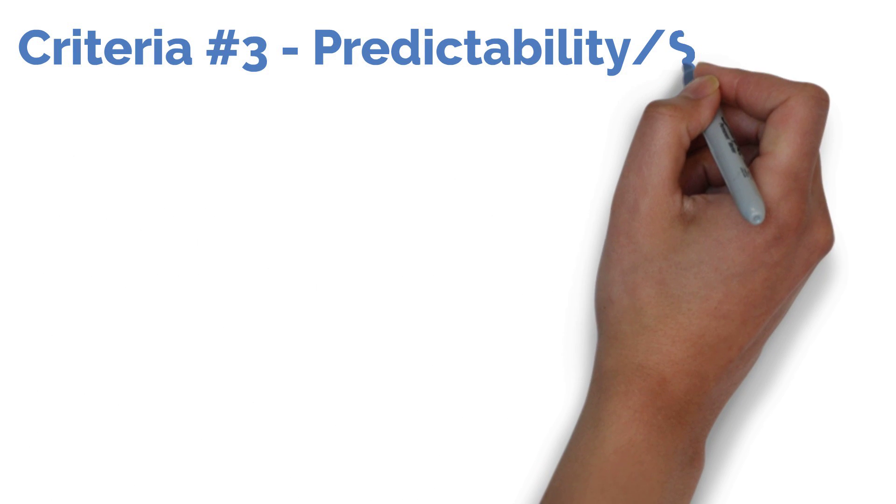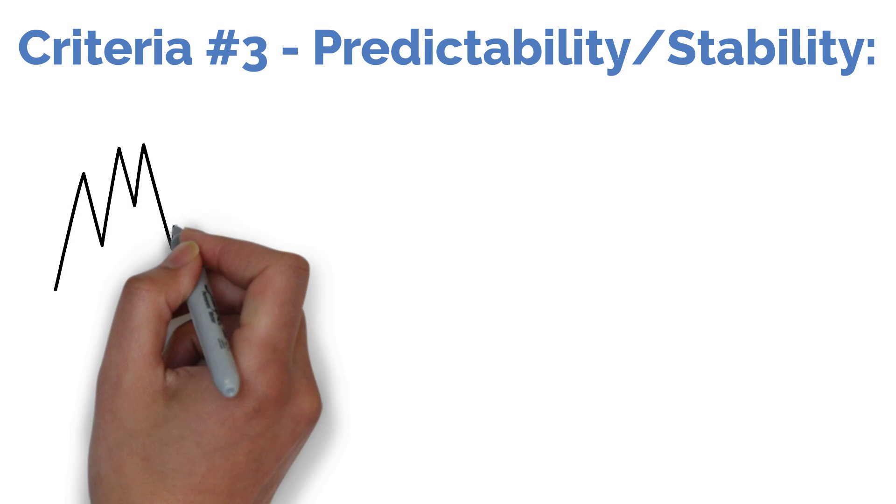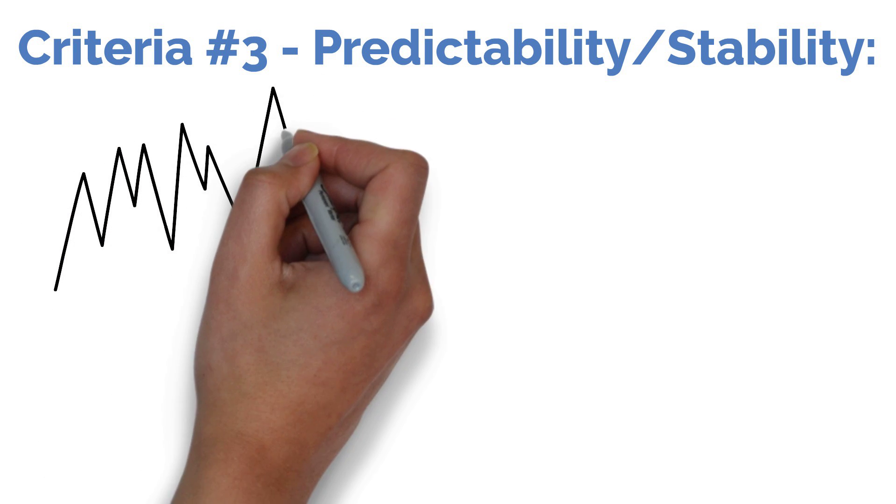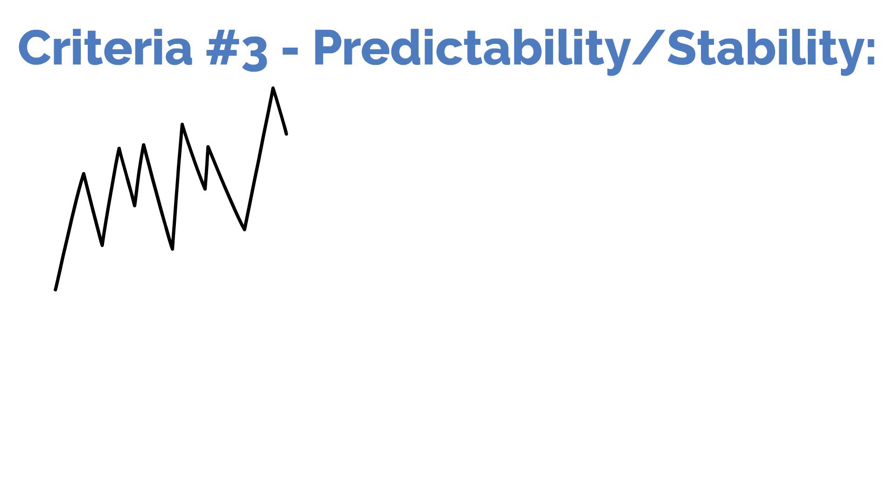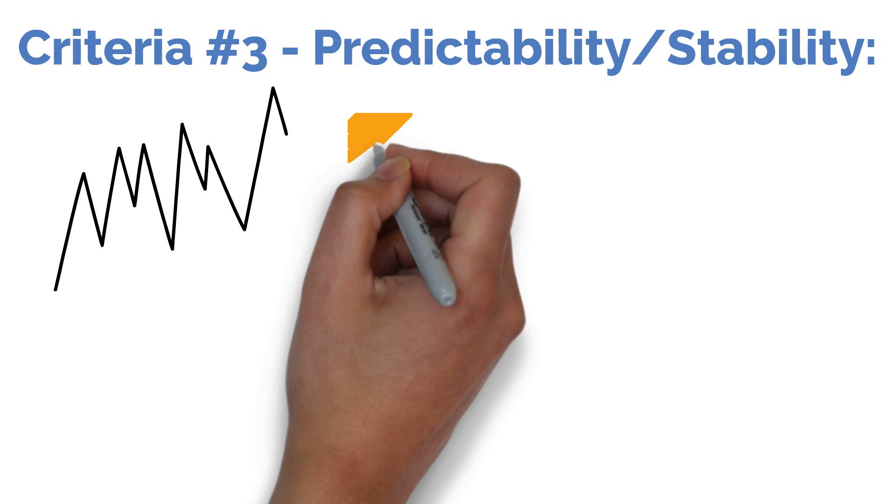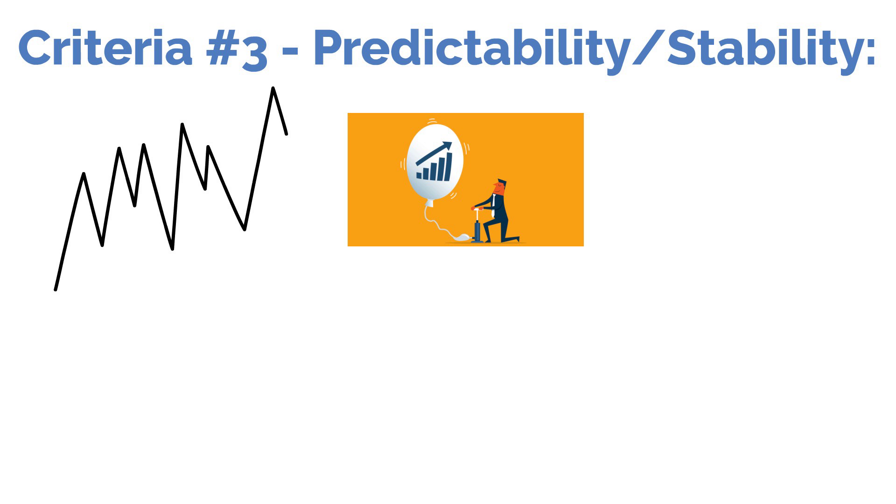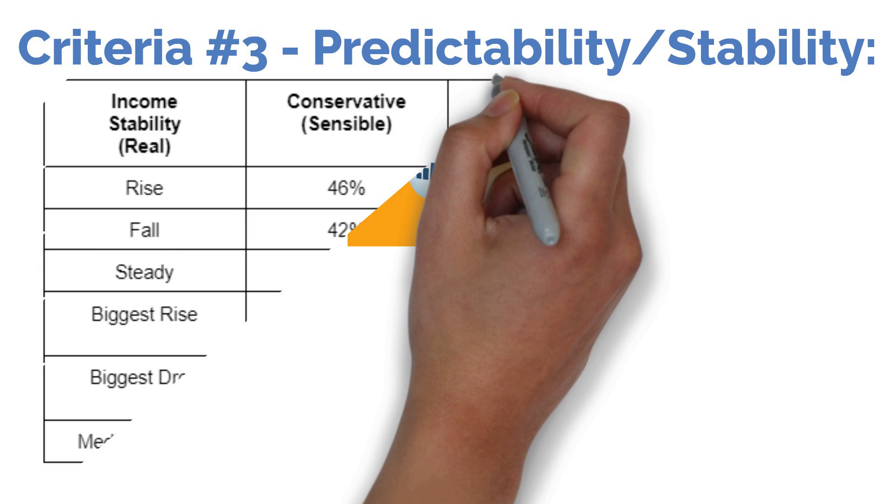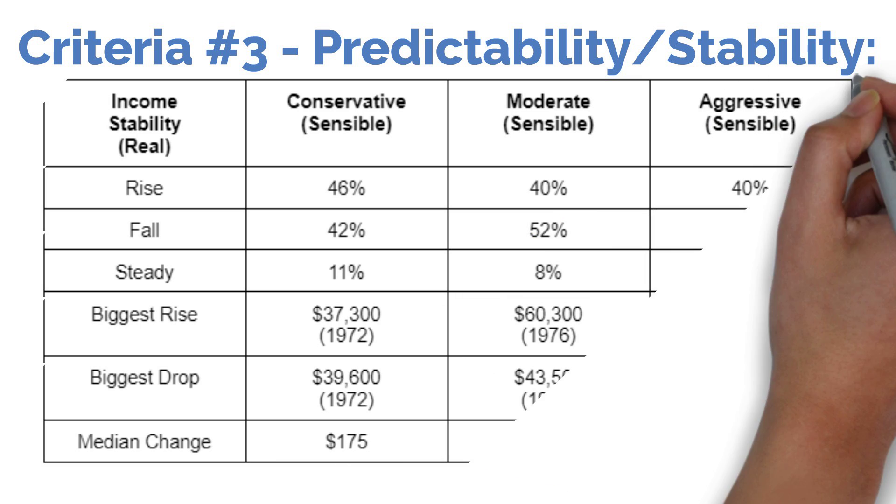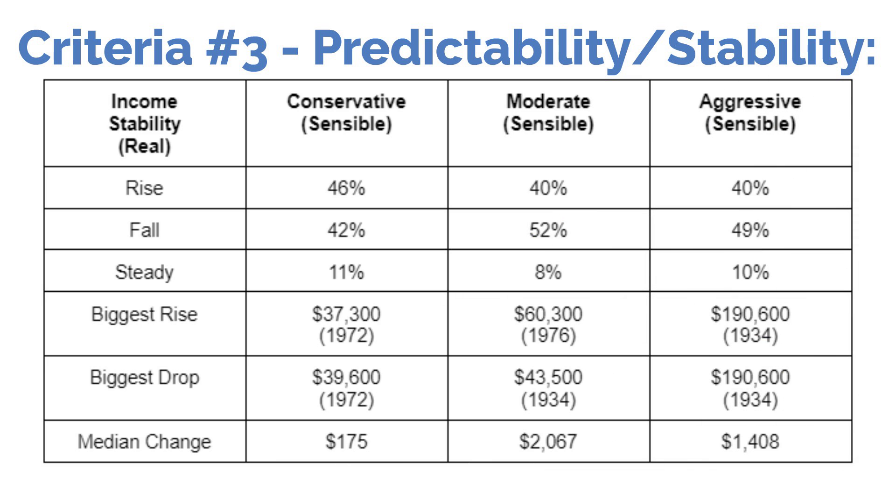The third factor I look at when analyzing withdrawal strategies is the predictability or stability of the income stream it produces. And in this regard, even though the income stream is more variable and thus less predictable in the strict sense, the sensible strategy is arguably just as stable. The floor of the income is going to rise at a minimum in line with inflation as measured by the CPI each year, just like the 4% rule. It's just that in some years the overall income will rise at a rate that's faster than inflation and in other years the income will fall back down to that baseline level as you can see from this chart.